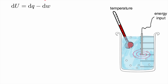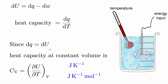We understand how the internal energy depends on heat added and work done. Assuming dW is zero, we define the heat capacity as the amount of heat needed to raise the temperature by a certain amount — dq/dT — and different materials have a different ability to absorb heat. Since dW is zero, dq equals dU, and the heat capacity at constant volume is simply dU/dT at constant volume. It has units of joules per Kelvin, or joules per Kelvin per mole, or joules per Kelvin per gram.